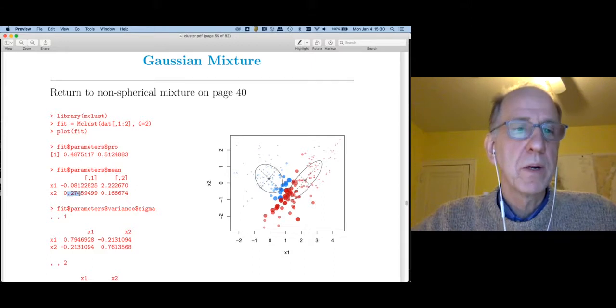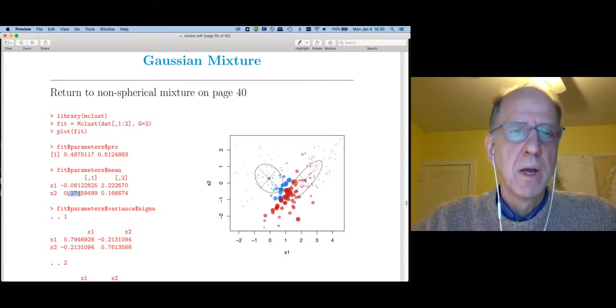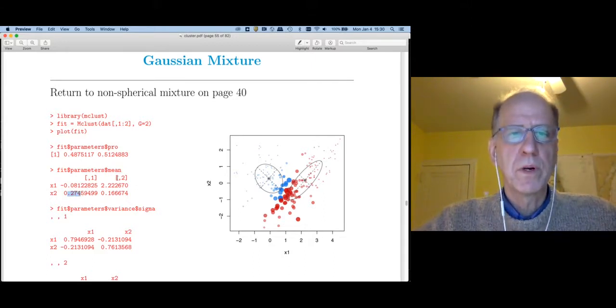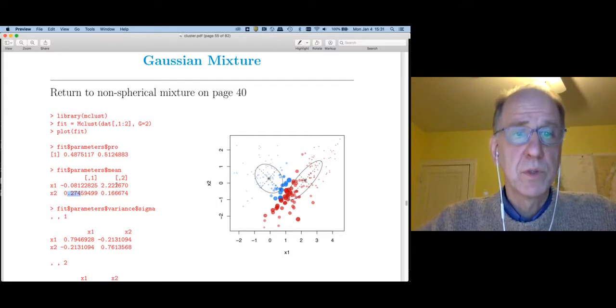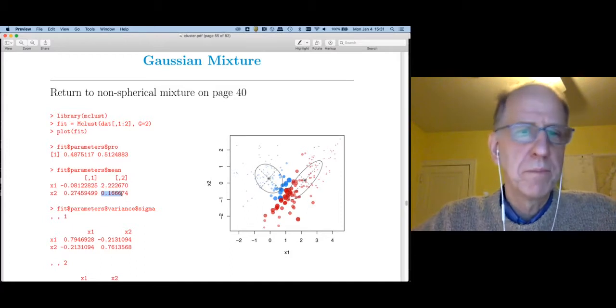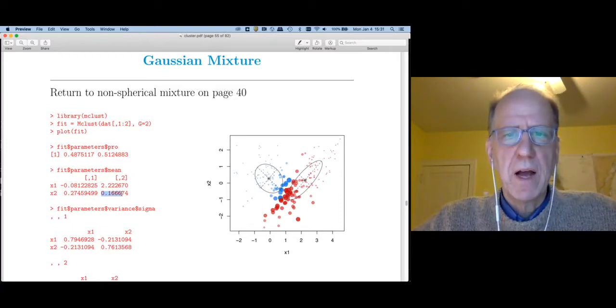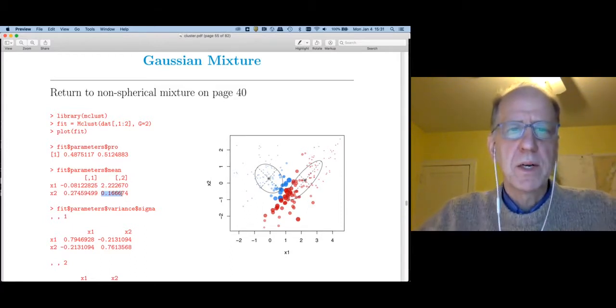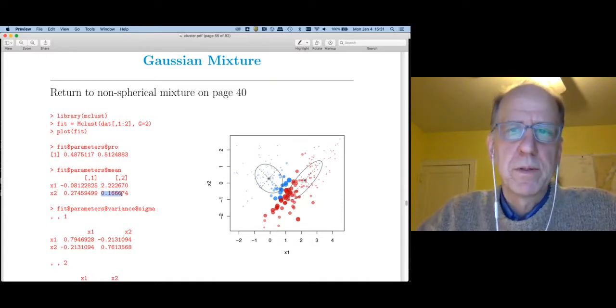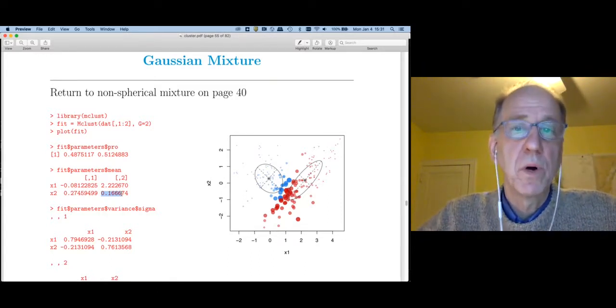The mean component of this gives a P by K matrix of means. You remember the true mean for the left distribution was 0,0. Well, we're close. Maybe we're a bit off in the x2 direction. The true mean for the second class was 2,0. Well, we're a little bit over and a little bit over in both cases. If I were to let the sample size grow, so with say 1,000 observations instead of 200, I would expect these to converge to the true values.